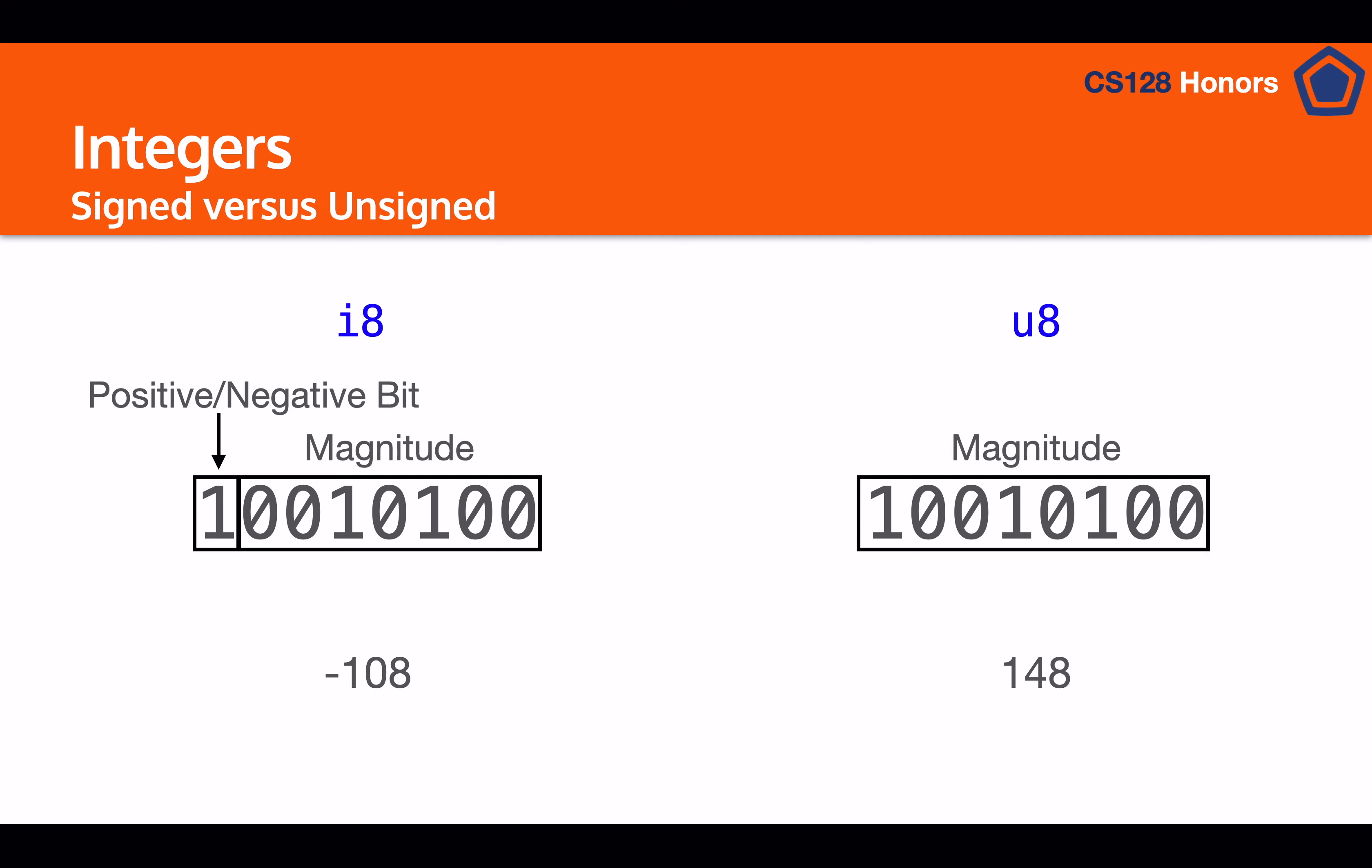Now, keep in mind that these are both just different ways of reading the exact same data. So if we look at this example, even though it's the same binary pattern, the signed integer is read as negative 108, whereas the unsigned integer is 148. Because in reality, all we're doing is we're deciding which one is negative and which one is positive.